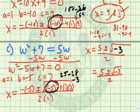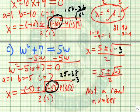So the answer is 5 plus or minus the square root of negative 3, all over 2. But wait — a negative inside the square root means this is not a real number. So there is no real number answer for this particular equation. Later in mathematics, in a subsequent course, you'll learn how to deal with this.